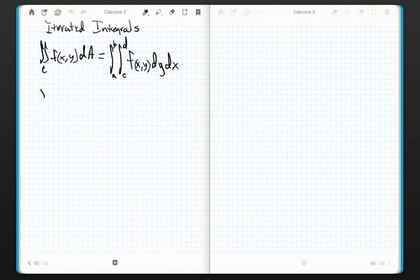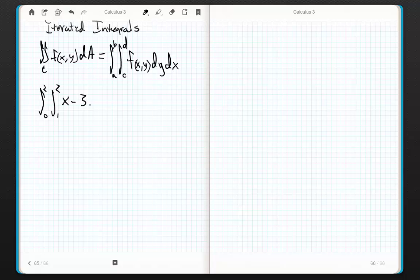I'm going to do the integral from 0 to 2 of the integral from 1 to 2 of x minus 3y² dA. Now, this is really important. This dA is pivotal because it's going to tell us how to behave. That's kind of key.